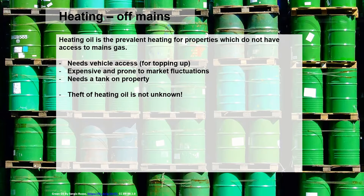If you're not within reach of mains gas, the most likely form of heating is heating oil. It is more expensive — a large truck parks outside the house to pump fuel into a tank on the side of the property. Because it's a product you buy every four months or so, the price can go up and down with market fluctuations, so you're never quite sure how much you'll spend on heating. It's also not unknown for rural properties to have their heating oil stolen, as it's quite an expensive commodity.